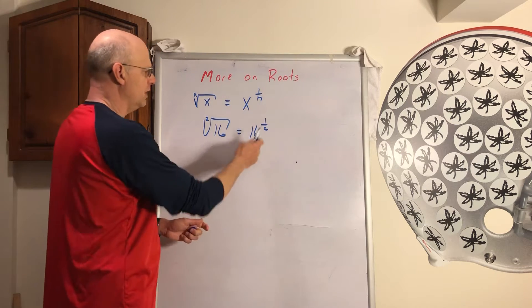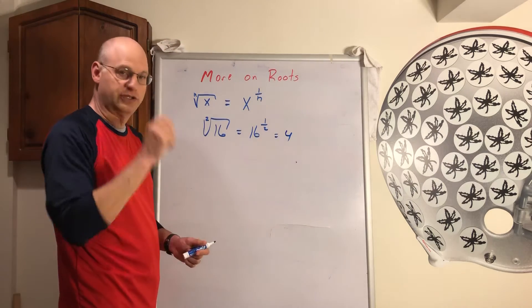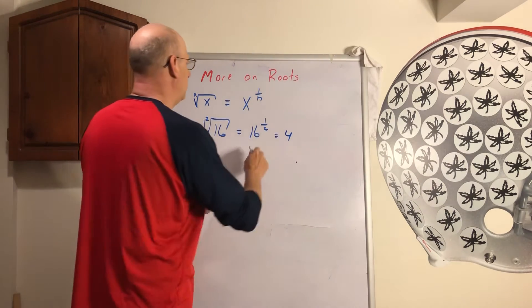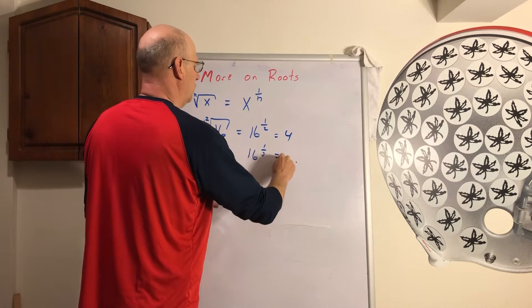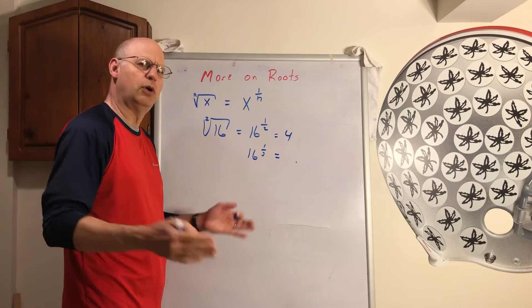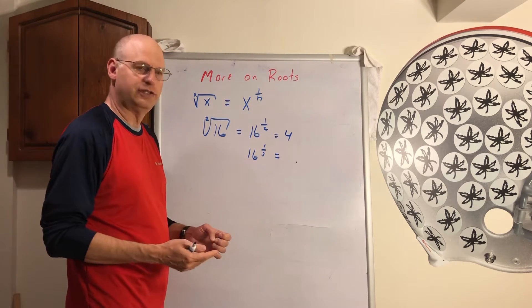Now if it's 16 to the 1 half, I think everybody knows that's a 4, because 4 times 4 is 16. What if it was 16 to the third root? Well we don't know that, because there's no whole number that you're going to multiply by itself three times to get 16.